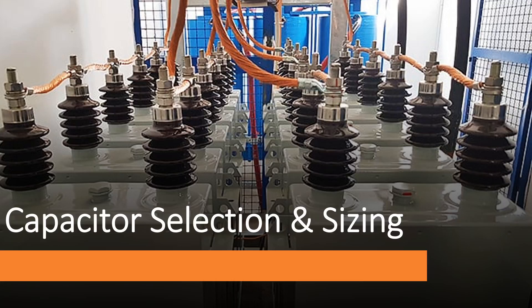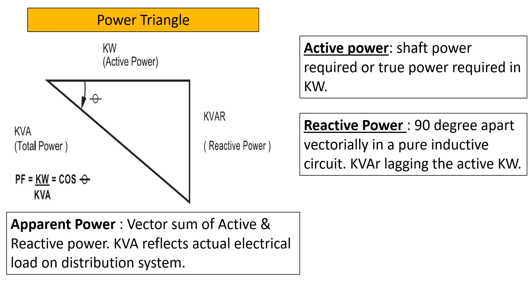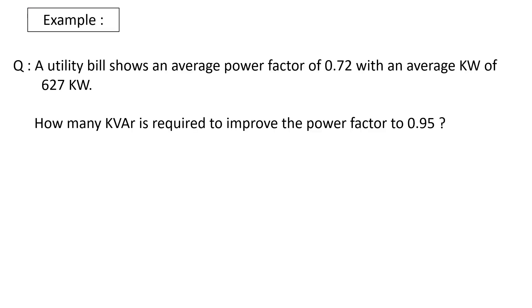Hello friends. In this video we will cover sizing of capacitor banks which are being used for power factor correction or improvement. You can see a power triangle mentioning active, reactive, and apparent power. I am assuming that you are aware of basics of the power triangle. Related to our topic, the most important equation is power factor — it is the ratio of kilowatt and kVA.